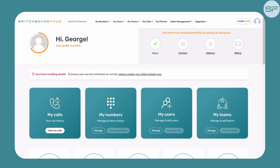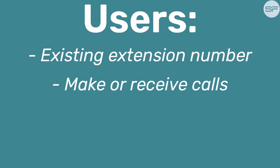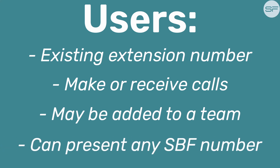When you log into your online Switchboard Free account, you will see the My Users section. A user is someone with whom you have already set up an extension number — they can make or receive calls, and you can add users into a team. A user can present any one of your outbound Switchboard Free numbers as their outbound phone number.